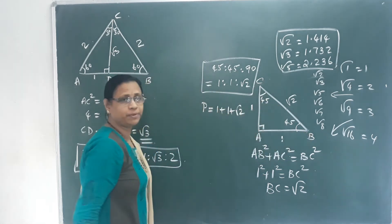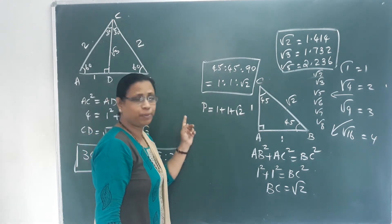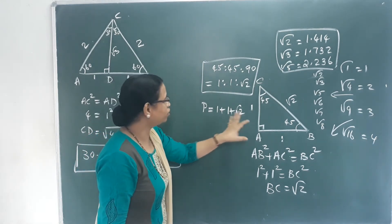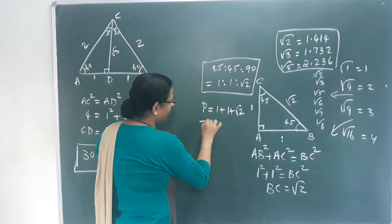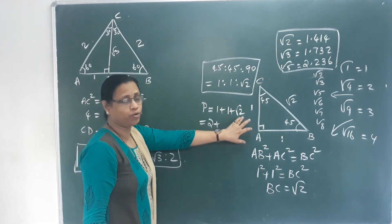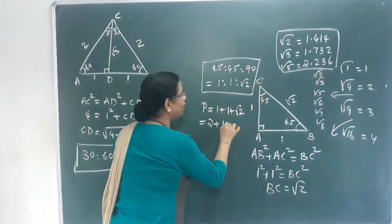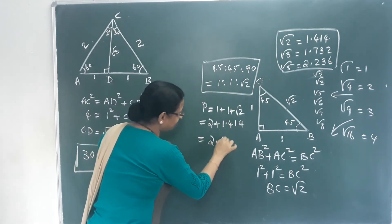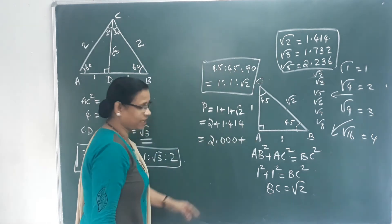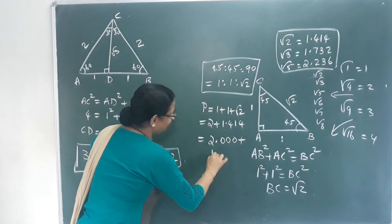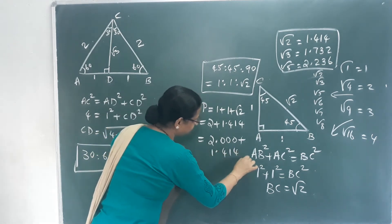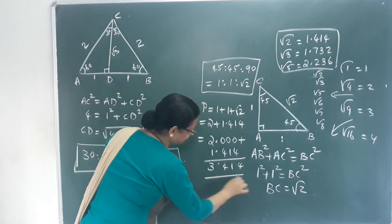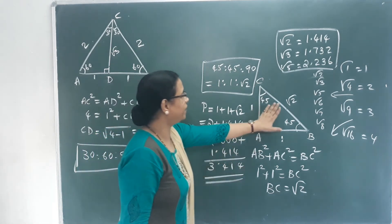This is the triangle perimeter. We can add these numbers. We add from root 2 to root 2. The value of root 2 is 1.414. We add: 2.000 plus 1.414. This is a simple addition. We add the triangle perimeter.